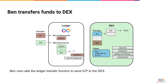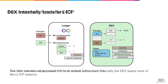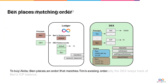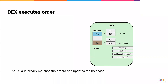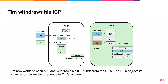Ben then transfers the funds to this account and calls Deposit to register them with the DEX. He opens his own order to match Tim's, and we can see that the DEX automatically resolves the orders and updates all balances. To then withdraw funds, Tim can call Withdraw, and the ICP can be transferred to his account.